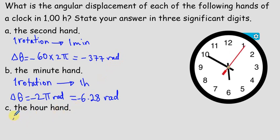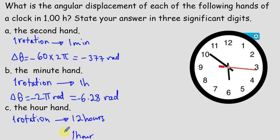For the hour hand, we know that one rotation, when it makes one rotation, means 12 hours. So divide this part by 12, it gives you one hour, and divide the number of rotation, one over 12 of a rotation.